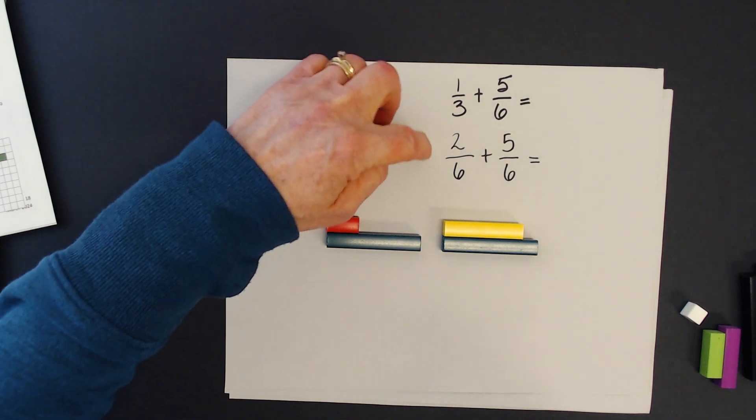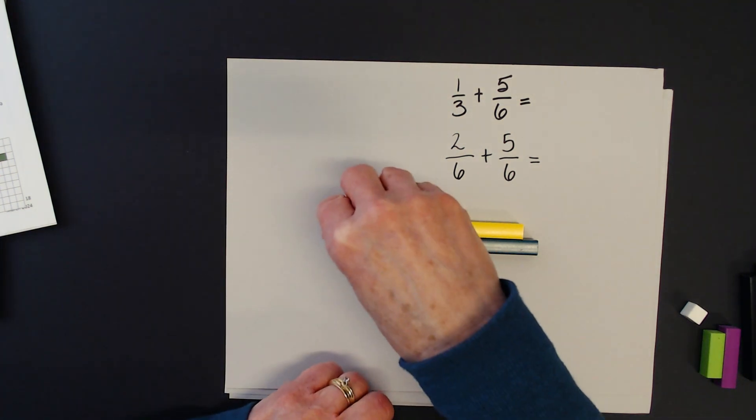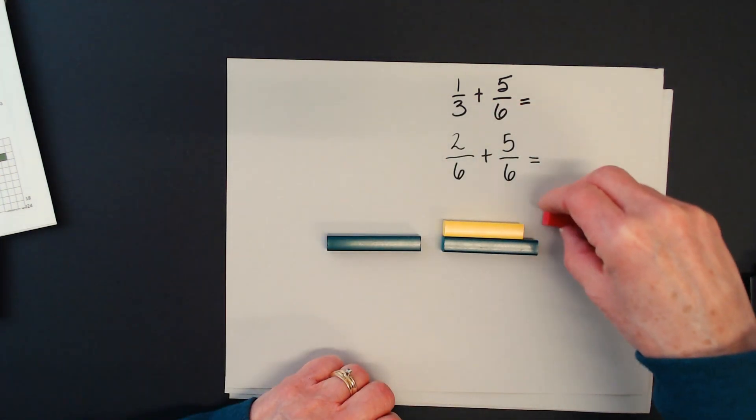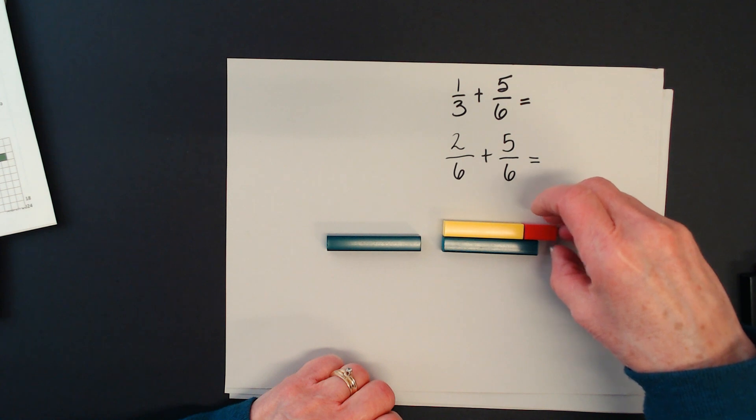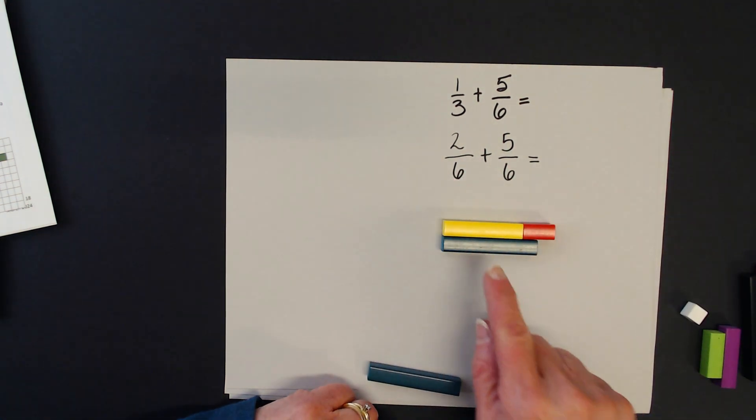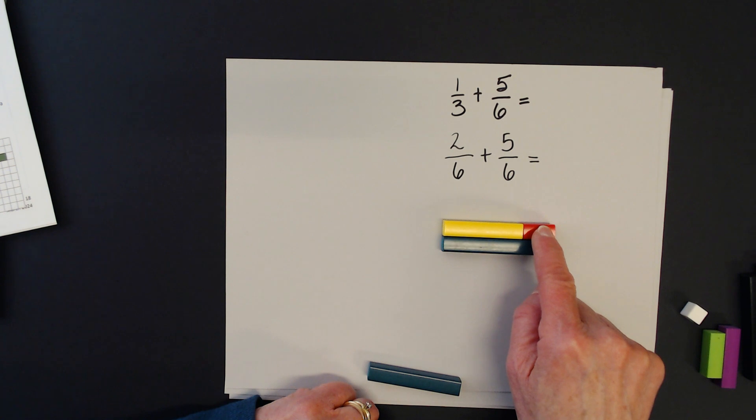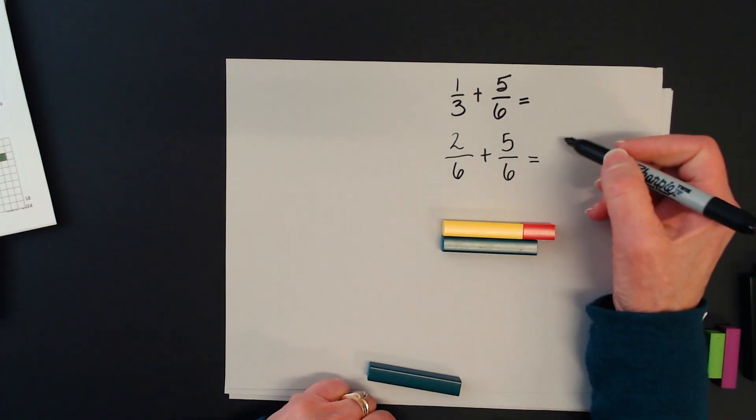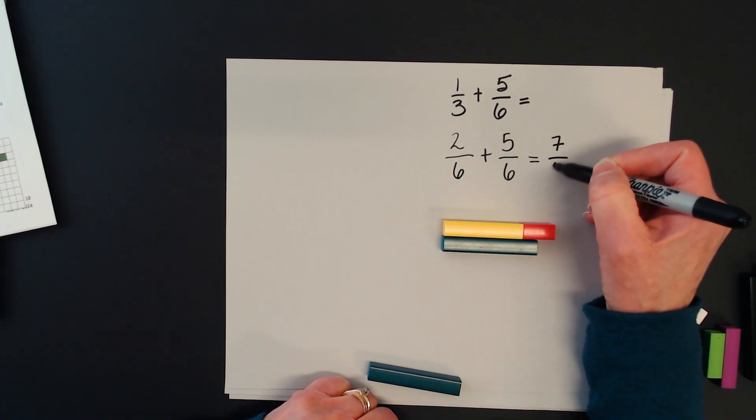These are equivalent fractions. Now what I can do is I can put the two sets of sixths together, and I see what I have. I have 5/6, and another 2/6 is 7/6.